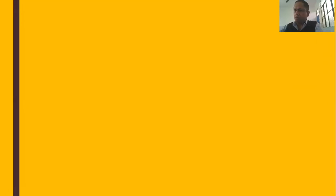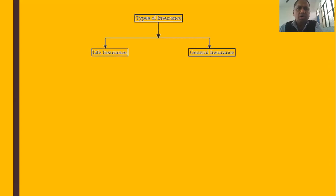We start with the next types of insurance. Insurance are of two types: the first is life insurance and the second is general insurance.